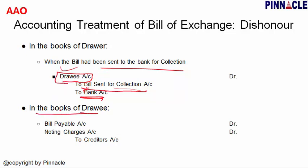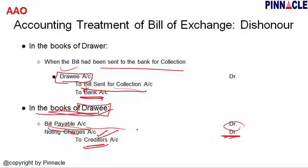In the dishonored case in the drawee's books: there is no debtor entry as before. The bank has debited his account for the noting charges. The noting charges are an expense for the drawee, so they are debited. Then to Creditors Account — now the drawee has to pay not only the 3,000 rupee bill payable, but also 50 rupees noting charges, making the total payment 3,050 rupees to creditors.